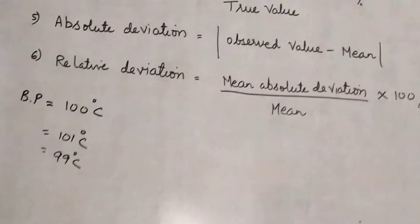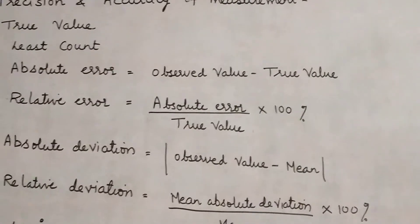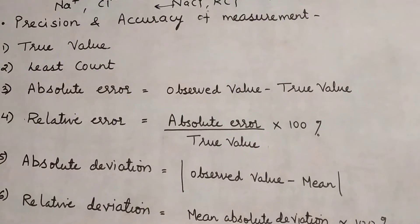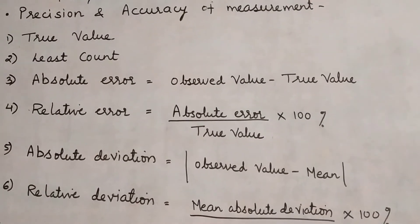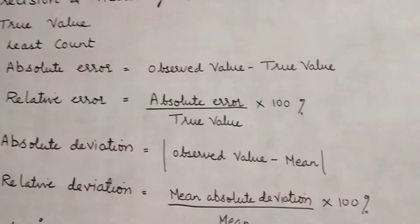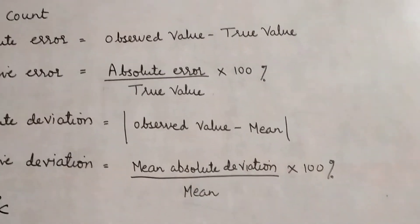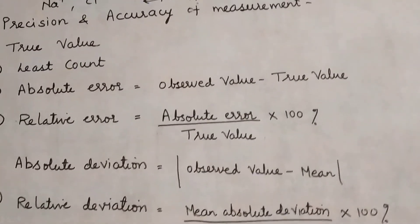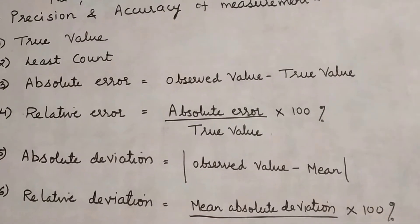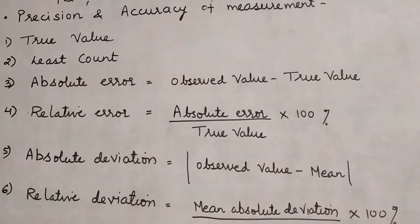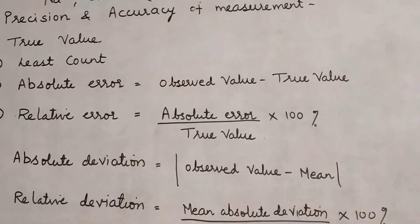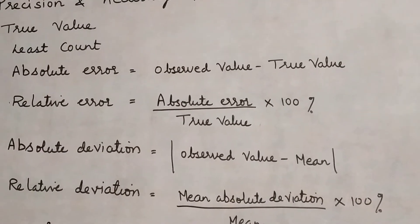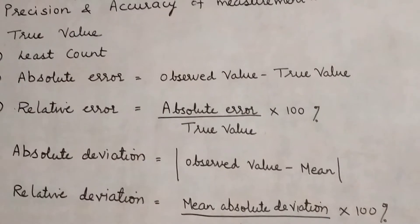Next is least count. In any instrument, the lowest count that you can measure is called least count. For example, in your scale, the scale we use for geometry, that scale has the least count as 0.1 centimeter. The first line is at zero, and after that the first division is 0.1 centimeter, then 0.2, 0.3, 0.4, 0.5, and then after that you have 1 centimeter complete. So 0.1 centimeter is the least count.